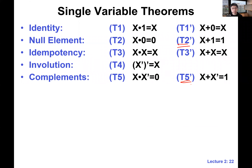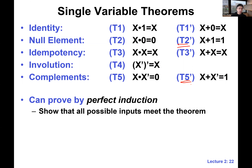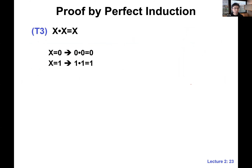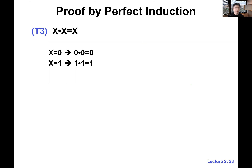These are the simple theorems that involve only a single variable, and we can prove them by perfect induction — which is a fancy name for brute force, where we just enumerate all the inputs and check the outputs. Let's prove a few of these quickly. For example, T3 — does anyone remember its name? Idempotency. To prove it, we just enumerate: when x is zero, what is the output, and when x is one, what is the output? That's it.